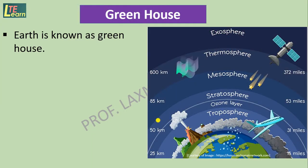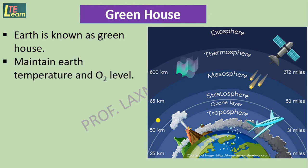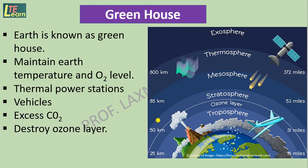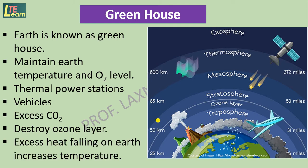The earth is covered by a blanket known as the greenhouse, which maintains earth's temperature and oxygen level. However, the use of thermal power stations and vehicles releases excess carbon dioxide into the atmosphere, which leads to destruction of the ozone layer, and excess heat falling on the earth increases its temperature.